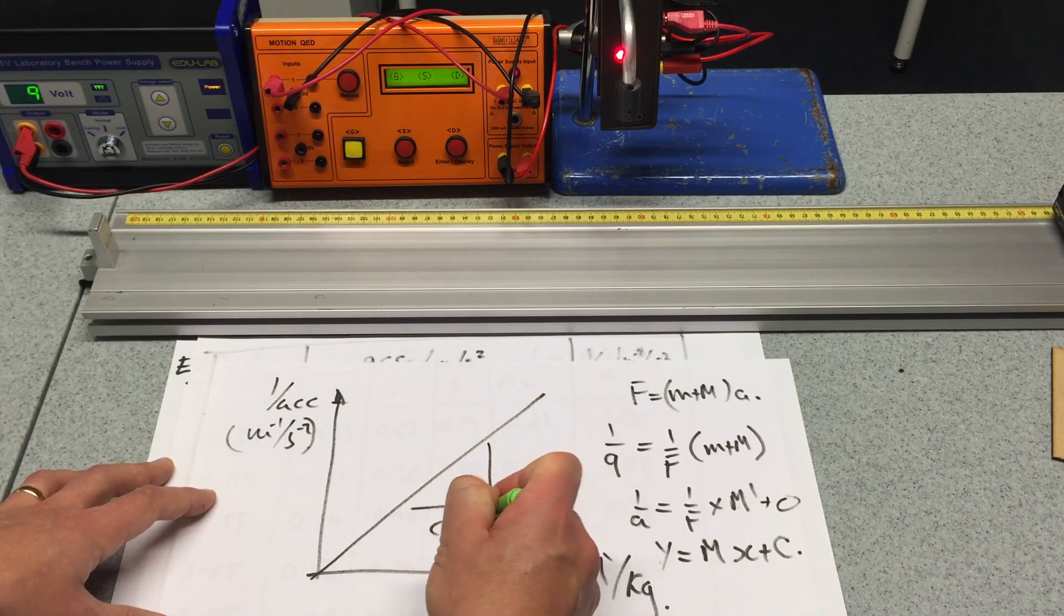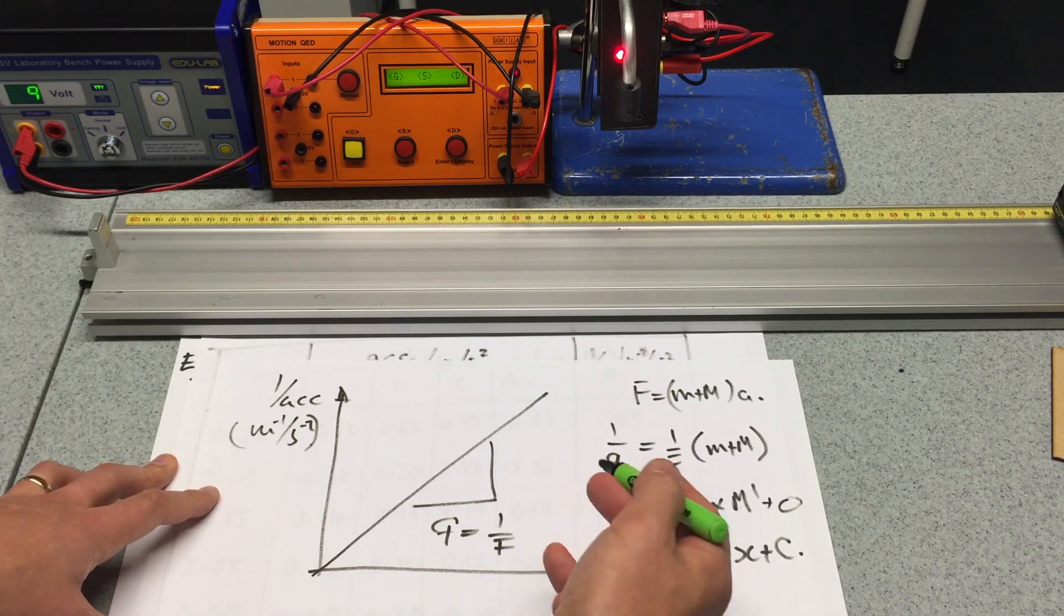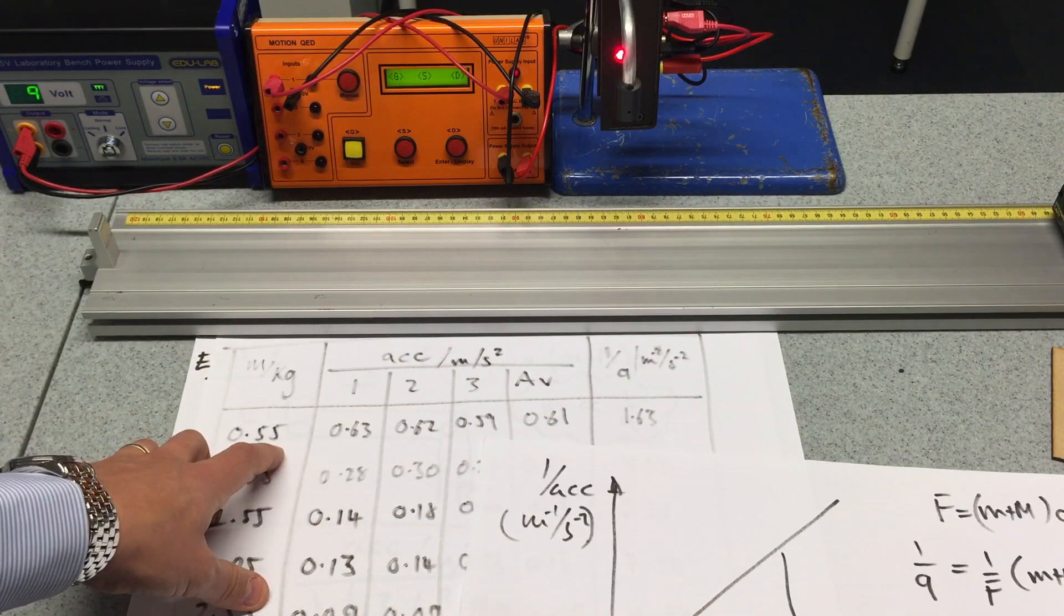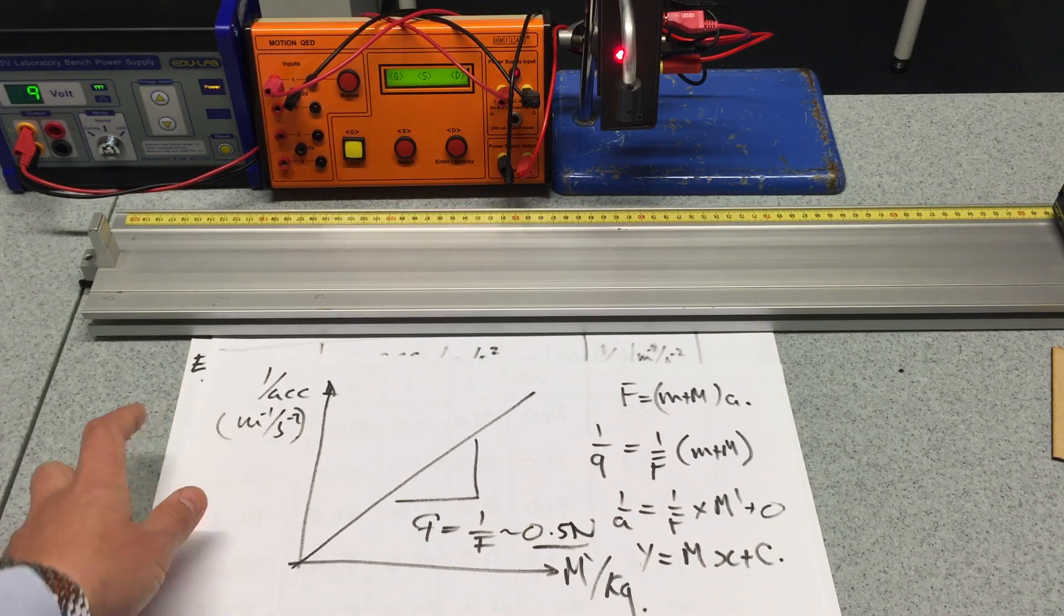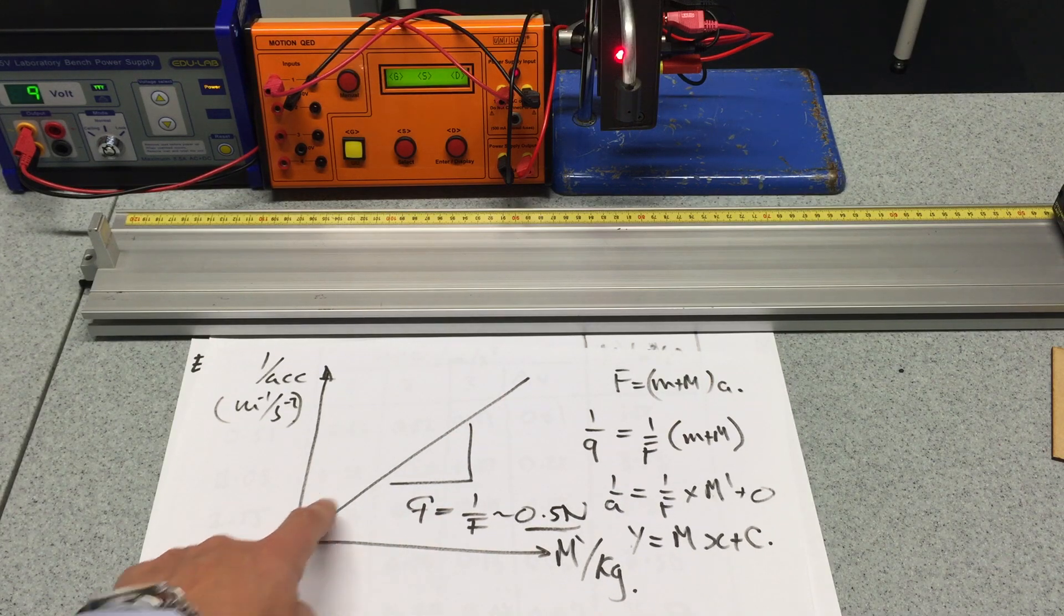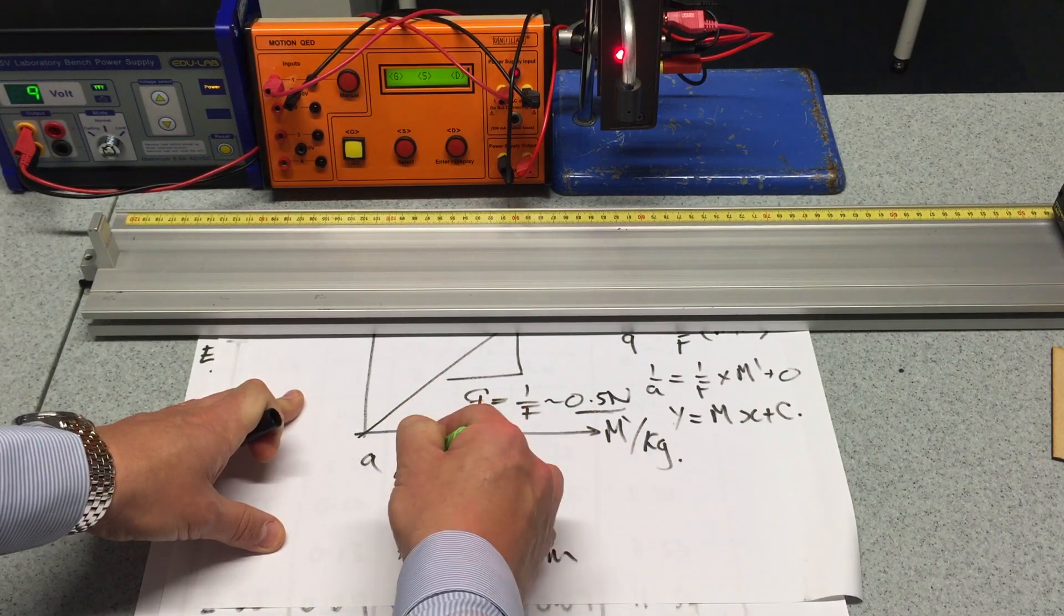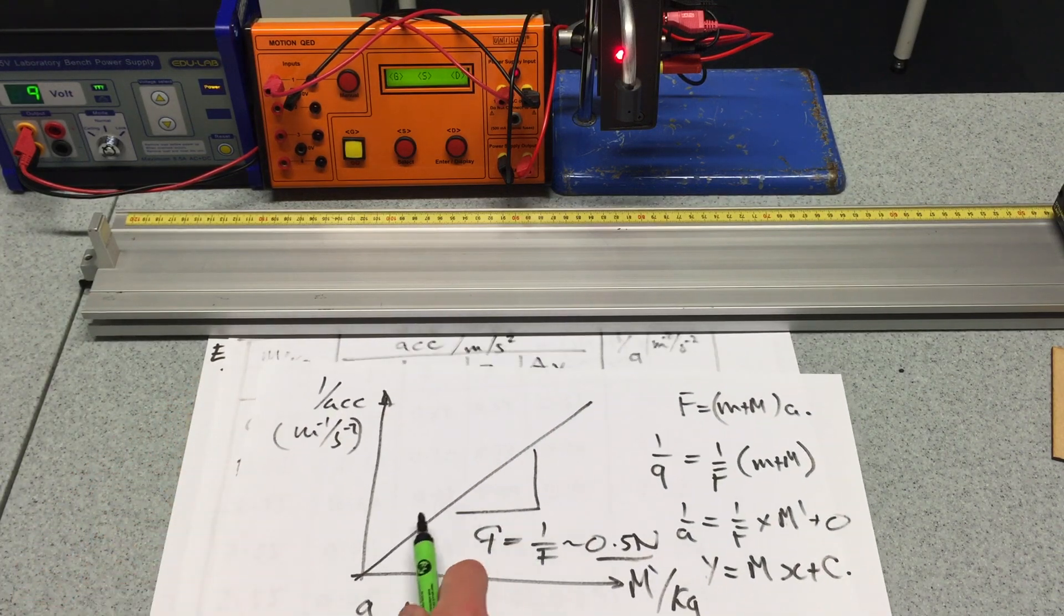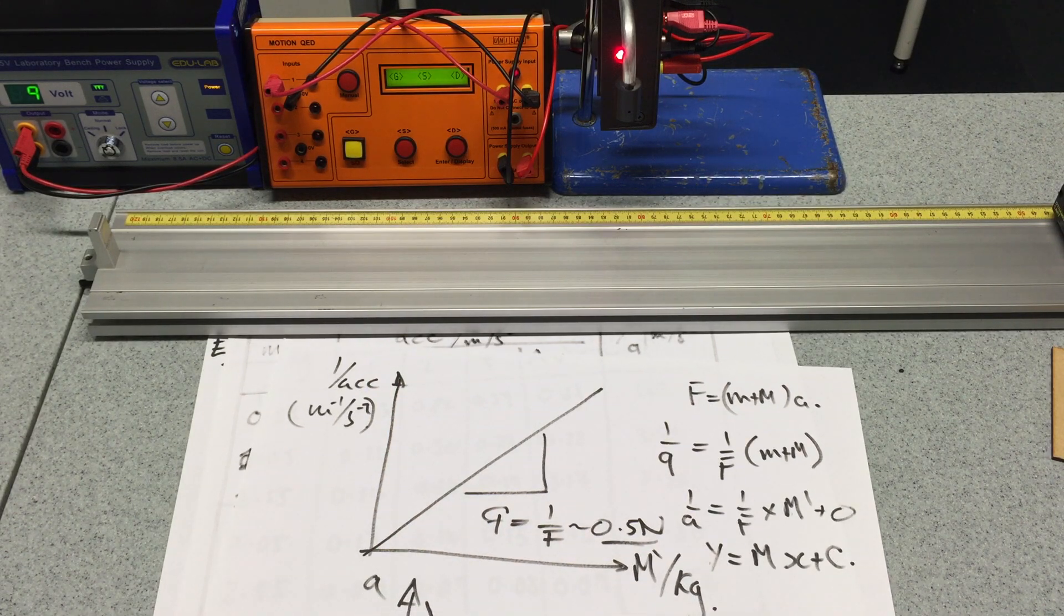So I hope that theory makes sense and how we can predict straight line. Of course, if I did just acceleration against mass, we'd see an inverse proportional graph. The inverse proportionality can be proved by plotting one over the acceleration against m. Hope that makes sense.